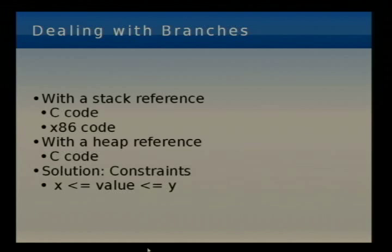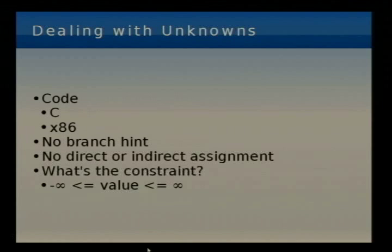For something like a buffer coming in from the network, we don't know anything about it, so we express it as negative infinity to positive infinity — unconstrained. In code we'd probably use something like negative-max-int-plus-10 and max-int-minus-10, only because many people use max-int for values in their programs. That has some problems and is a little bogus, but bear with me.